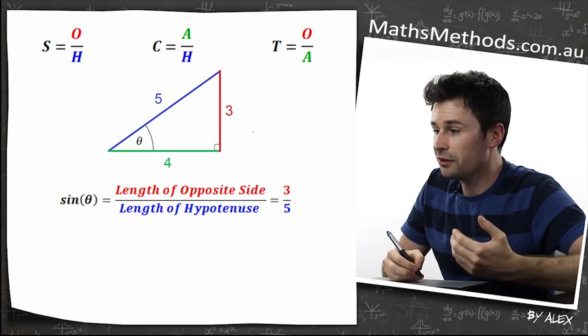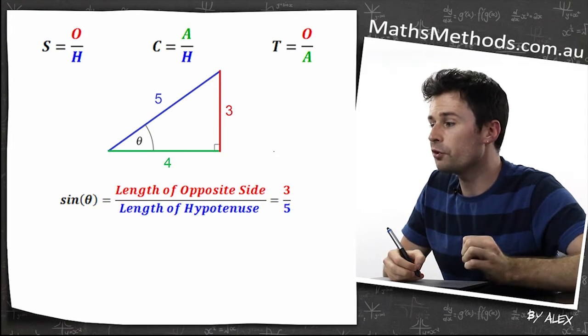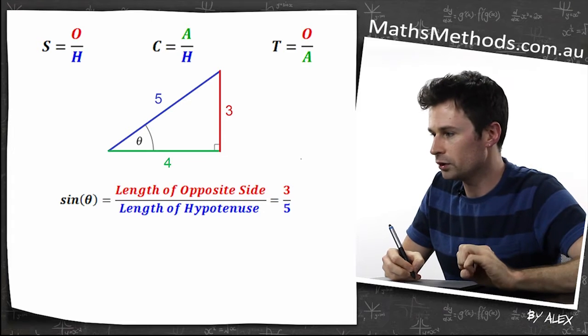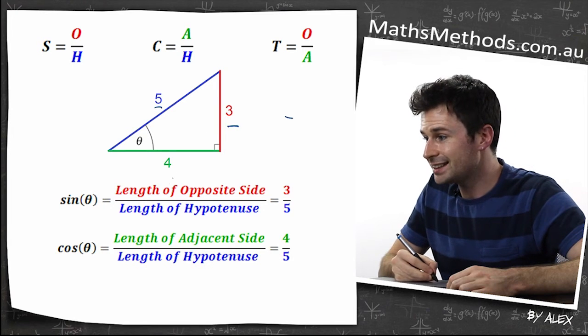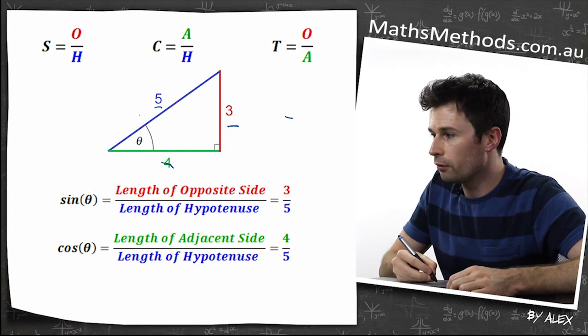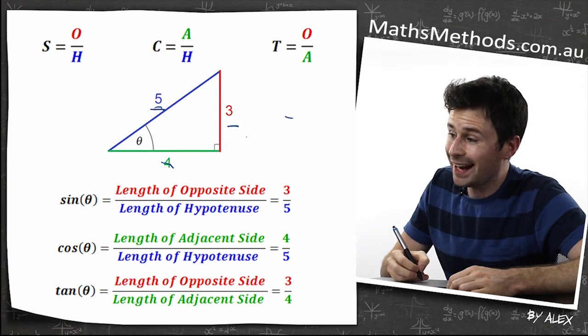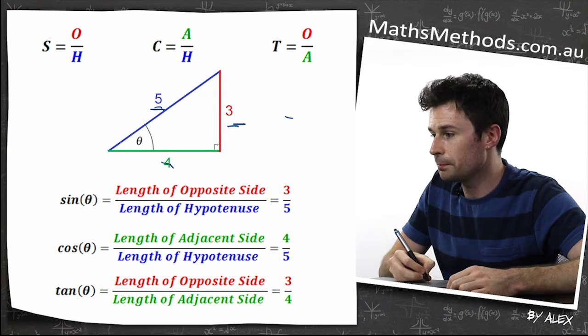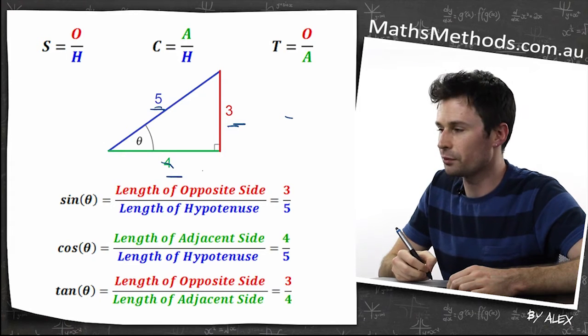If you look at SOH CAH TOA, sine theta is the length of the opposite side divided by the length of hypotenuse. Cosine is the length of the adjacent side divided by the length of the hypotenuse, so that's four over five. And tangent is the length of the opposite side divided by the length of the adjacent side, so that's three over four.